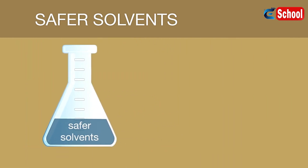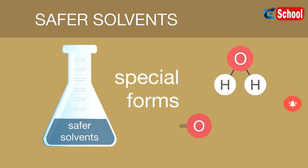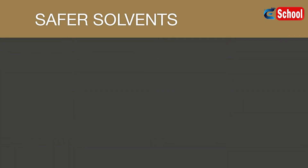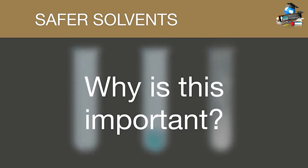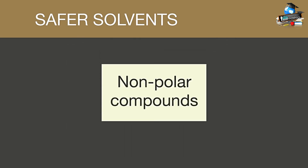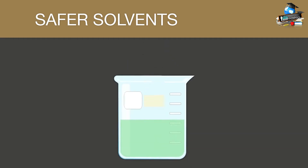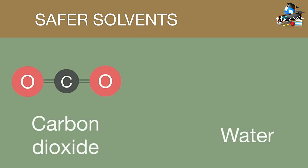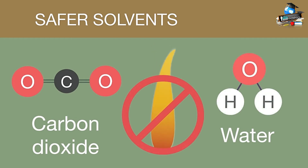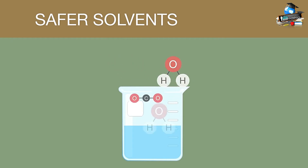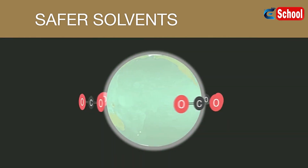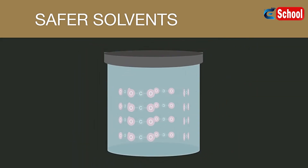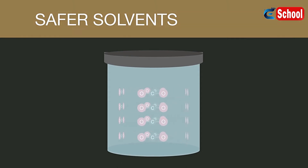These safer solvents include special forms of water and carbon dioxide which exist in a supercritical state — meaning that at a certain temperature these solvents exist as a solid, liquid, and gas simultaneously. Non-polar compounds traditionally needing organic solvents can be dissolved in these safer solvents. Carbon dioxide and water are not flammable like most organic solvents and are very easy to obtain from other chemical processes. Instead of releasing carbon dioxide into the air and contributing to global warming, we can collect it and use it as a solvent. This has been especially useful to the dry cleaning and textiles industries.